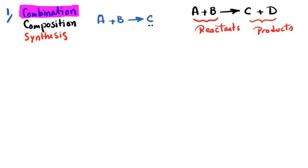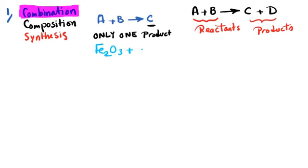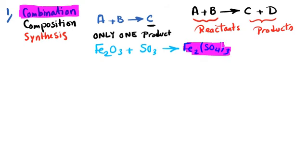The general pattern for a combination reaction is: A reacts with B to produce C. If we have only one product, we call that a combination reaction. For example, consider Fe plus Fe2O3 — on the right side there is only one chemical formula, only one product, so we call that a combination reaction.